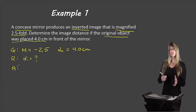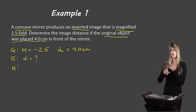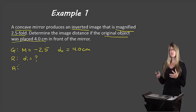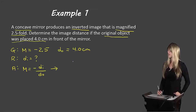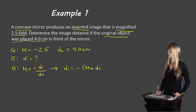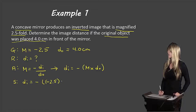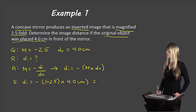Now we need to figure out which piece of the equation to use. We're given information about magnification and distance, and we're asked about distance, so we'll use the piece of the equation that relates magnification and distance — ignoring the piece that has to do with height. That equation is: magnification equals negative DI over DO. Rearranging for DI, we get DI equals negative magnification times DO. Substituting: DI equals negative (−2.5) times 4.0 centimeters.